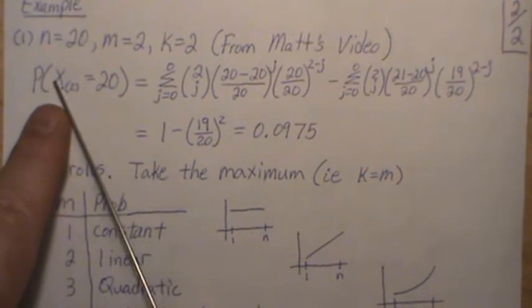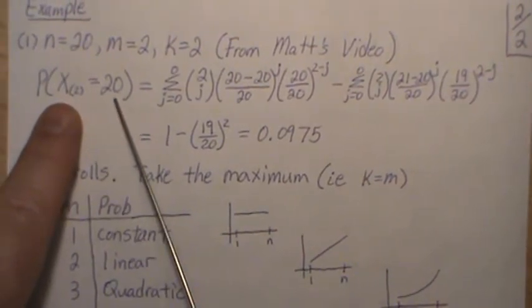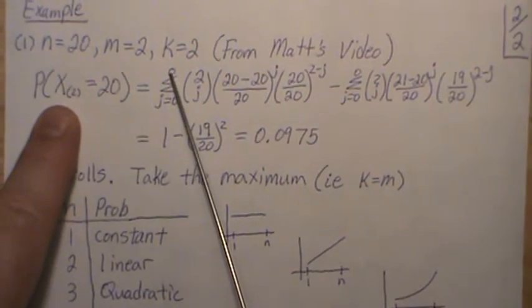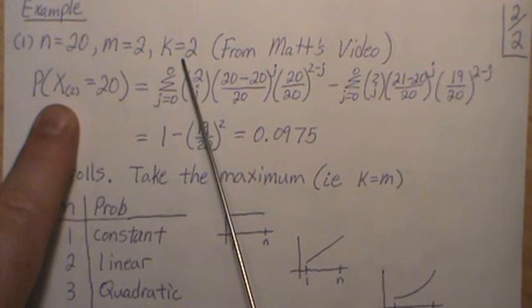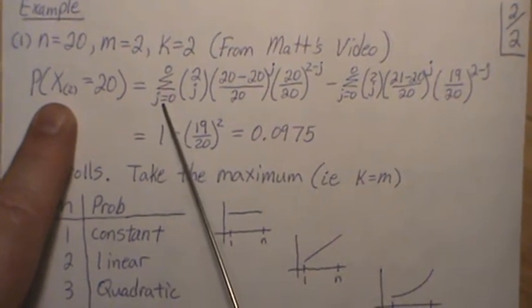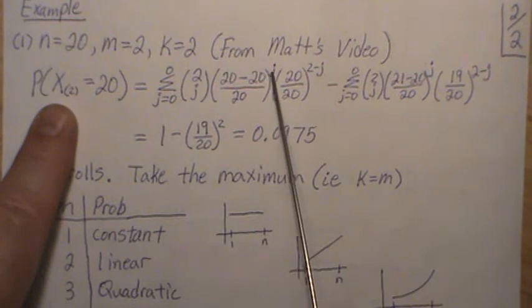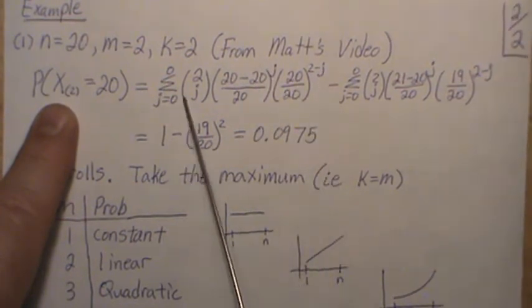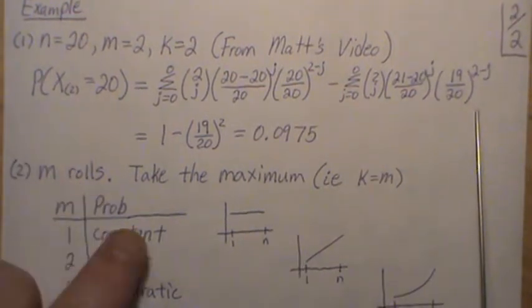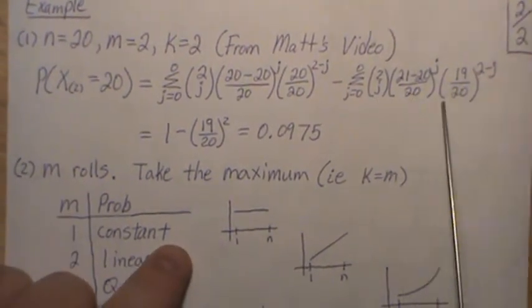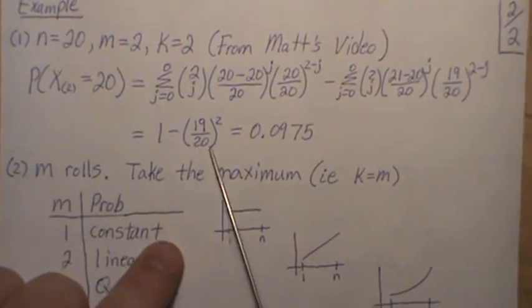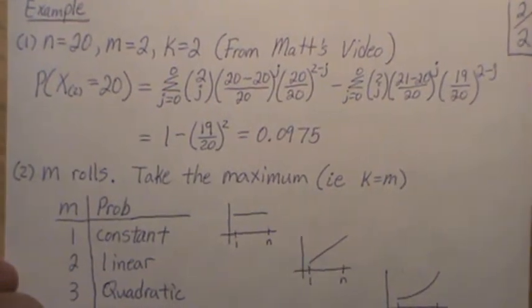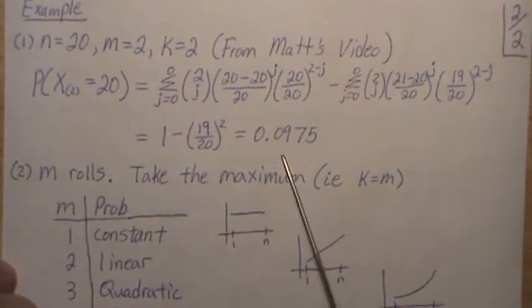And it's this, the probability that our largest value is equal to 20 is this sum. Now it goes from 0 to m minus k, but m and k are 2, so that's 0. So it's just j is 0, and that's a 1. That's a 0, so that's a 1. This is a 1. So this sum is 1, and then minus this. That's a 1, and this is a 1, squared. And if you look at 1 minus this, that is the 0.0975 that was in Matt Parker's video.